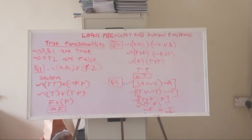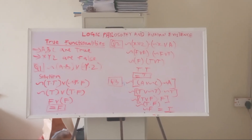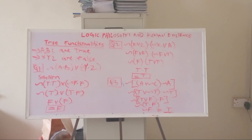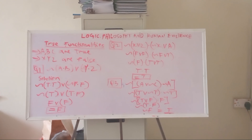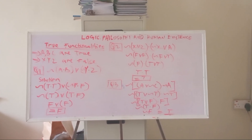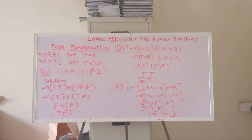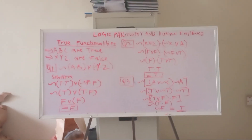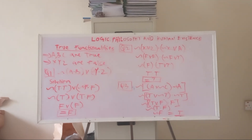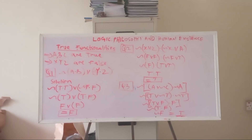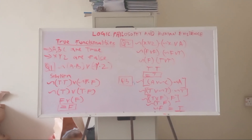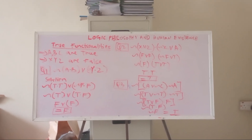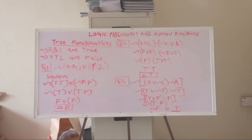Solving the brackets: F ∨ F is false. The negation of that false turns it to true. In the second bracket, ¬F is true, so T ∨ T is true. Now you have T ∧ T, which is true. So the final answer for the second equation is true.